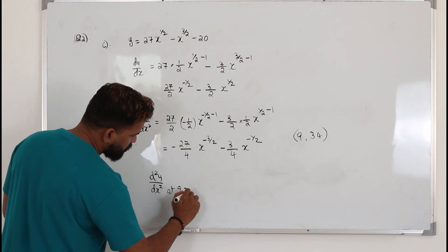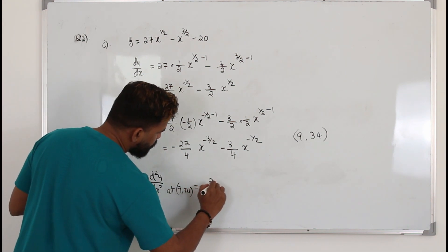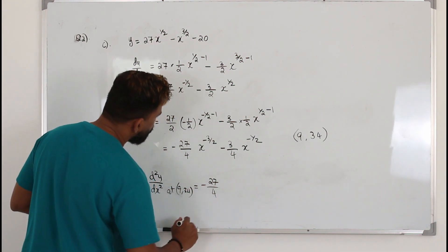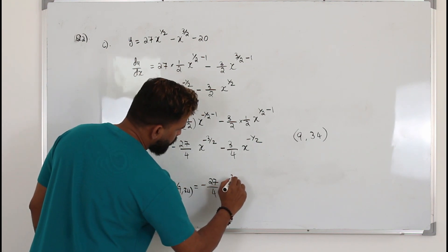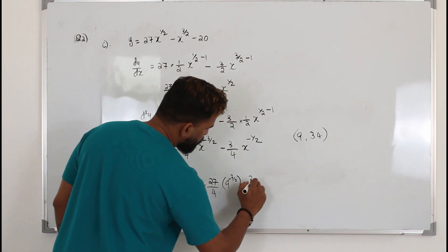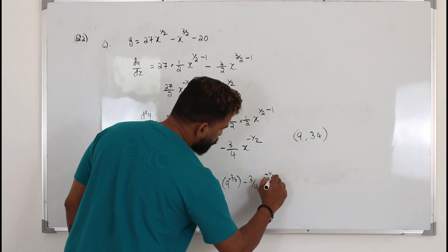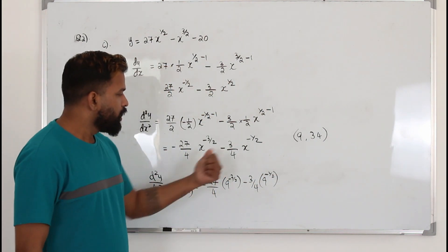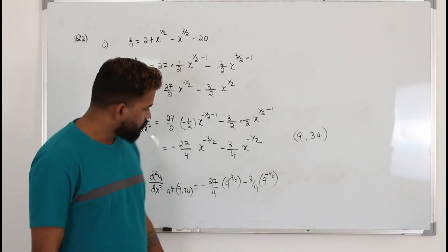At 9, 34 is negative 27 over 4, 9 power negative 3 by 2, minus 3 over 4, 9 power negative half.